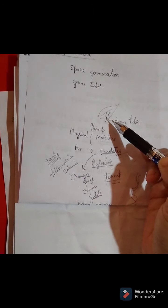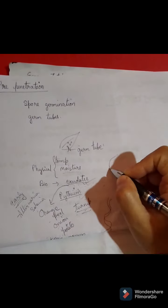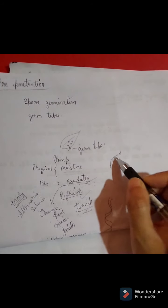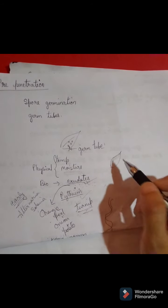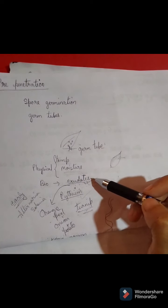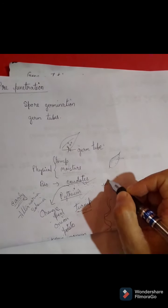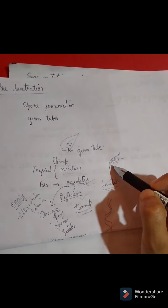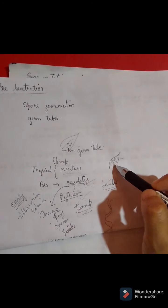Now, before the spore penetrates the plant, consider the example of apple. The leaf surface of apple is waxy and smooth. Plants produce these waxy substances, and these waxy substances inhibit spore formation. If spores come in contact with the apple leaf, they will not be able to germinate because of the presence of these waxy substances, which inhibit spore germination.